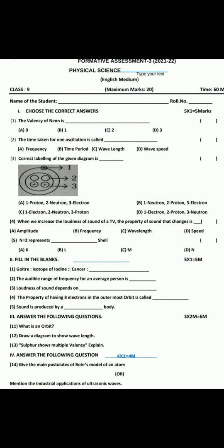Question three: the correct labeling of the given diagram. Here, the plus sign represents protons, the symbols represent neutrons, and the dots represent electrons. So: 1 electron, 2 neutrons, 3 protons. Therefore, option C is the correct answer.